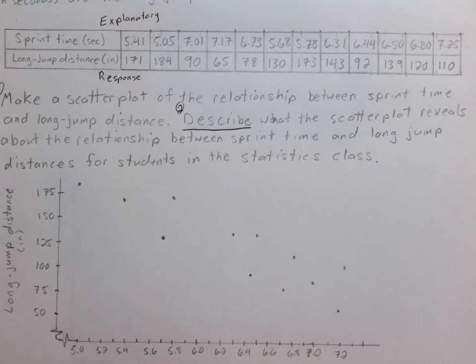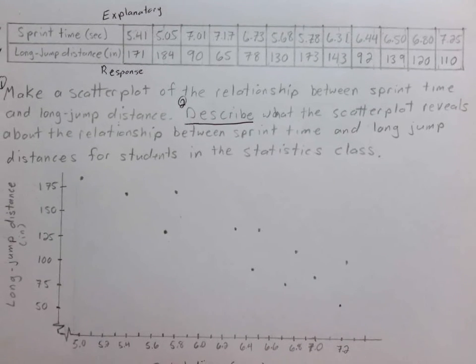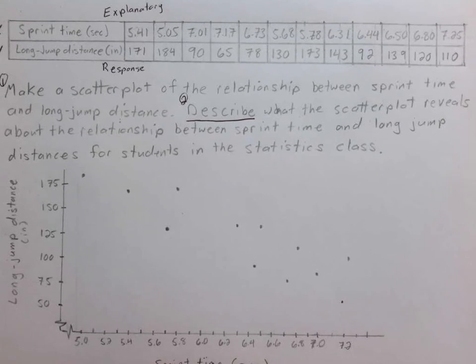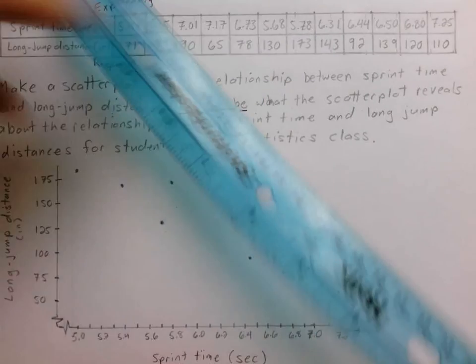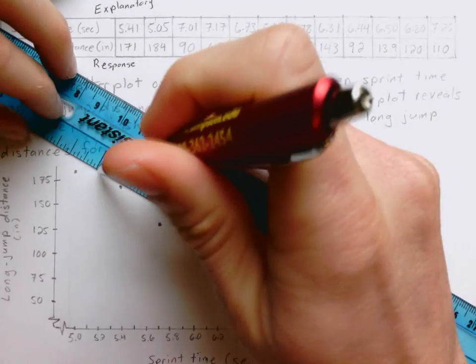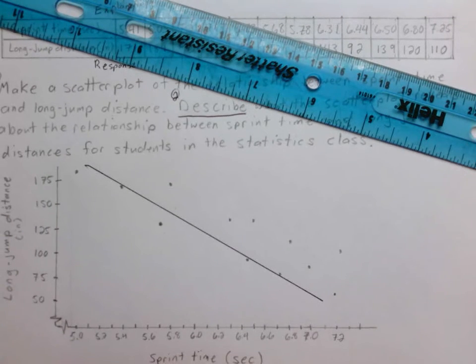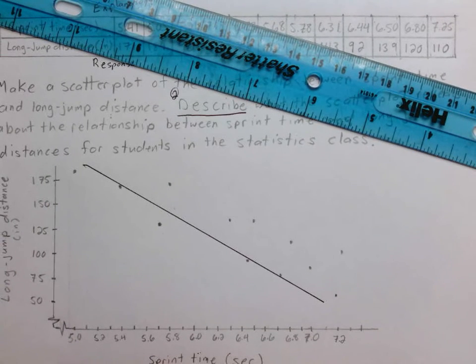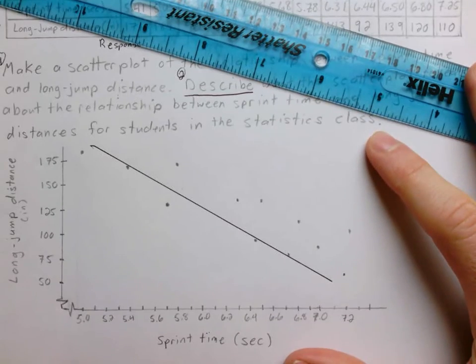For the strength, how close is this to being a line? I can grab a ruler and figure out where a line, if I were to draw it, might be. Maybe something like that. It doesn't have to be perfect. I'd say that's not super close to being a line, but it's not super far away either. So I would consider that to be moderately strong.